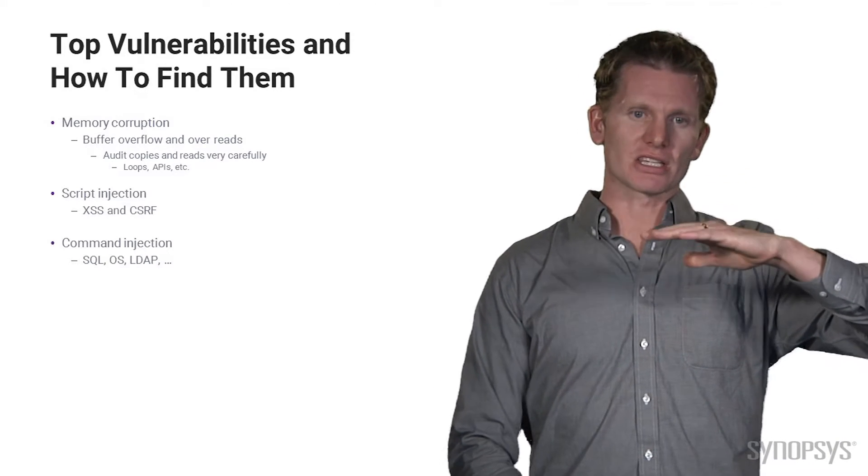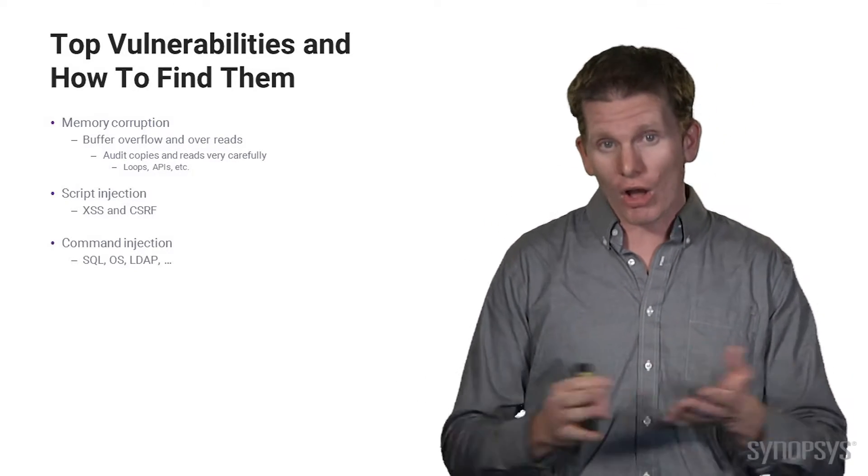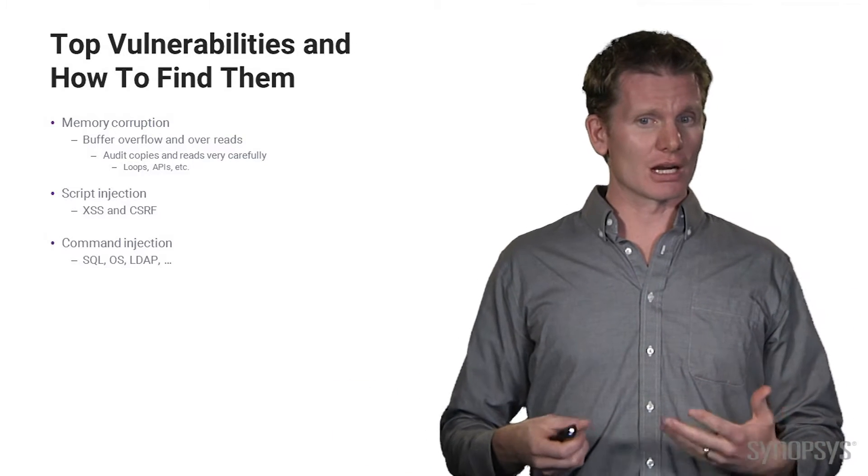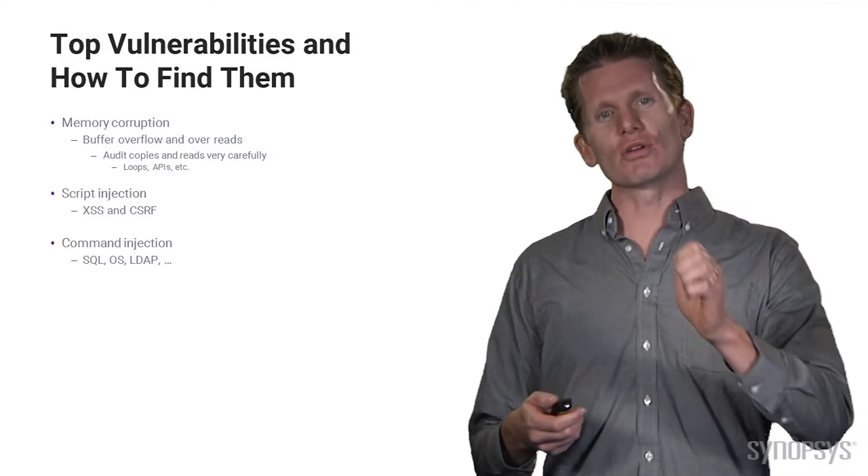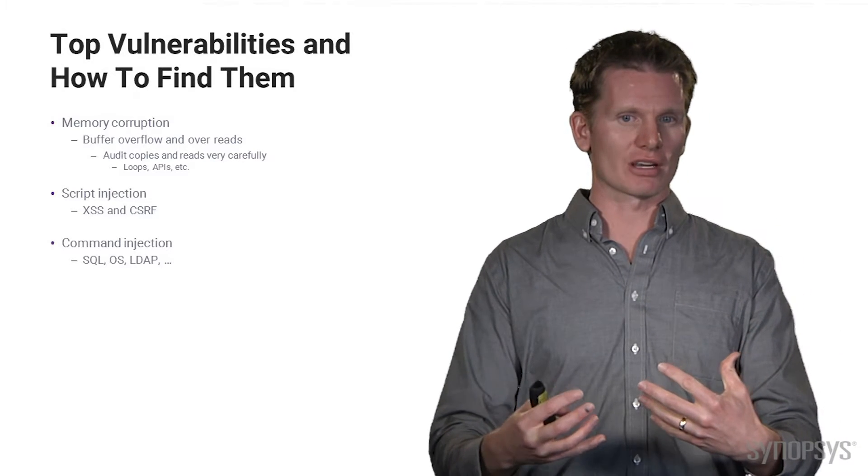And this is another look at something like a SANS Top 25. There's all these different types of vulnerabilities across all of your code that you've got to go and look for. And that's going to be a very difficult manual process if you don't have a way of automating that.